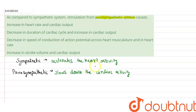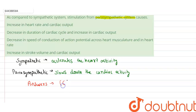Option C states decrease in speed of conduction of action potential across the heart musculature and decrease in heart rate. Here we can see that cardiac activity is slowed down, which is caused by the parasympathetic nervous system. So our answer is option C. The last option D, increase in stroke volume and cardiac output, is also caused by the sympathetic nervous system.